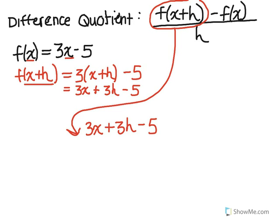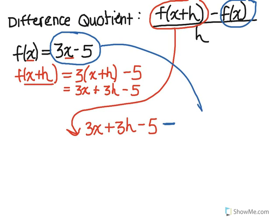And then we plug in minus f(x). So minus f(x), we don't have to do anything, that's what we're actually given. We're given that f(x) is just equal to 3x minus 5. So we plug that in right here, 3x minus 5.